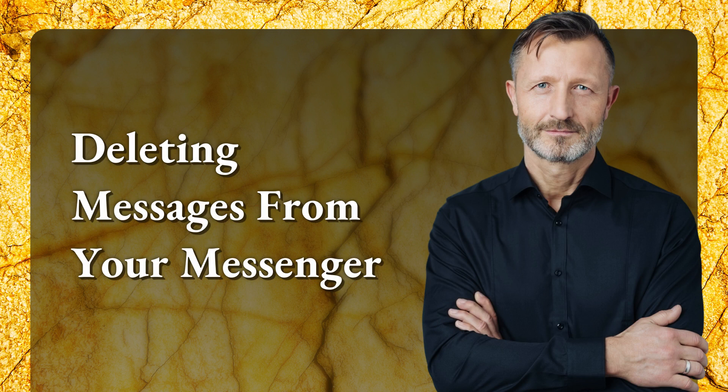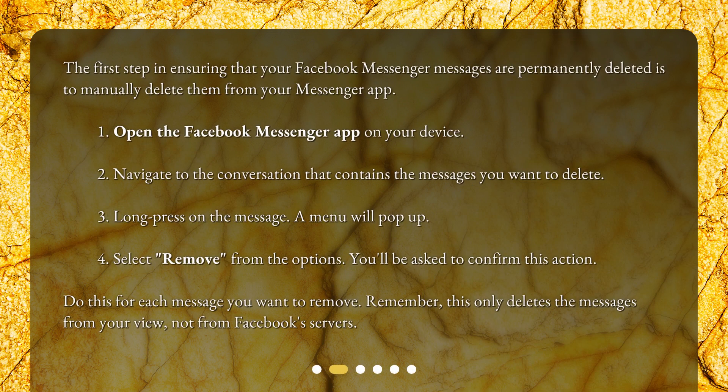Deleting Messages from Your Messenger. The first step in ensuring that your Facebook Messenger messages are permanently deleted is to manually delete them from your Messenger app. 1. Open the Facebook Messenger app on your device. 2. Navigate to the conversation that contains the messages you want to delete. 3. Long press on the message — a menu will pop up. 4. Select 'Remove' from the options. You'll be asked to confirm this action. 5. Do this for each message you want to remove. Remember, this only deletes the messages from your view, not from Facebook servers.